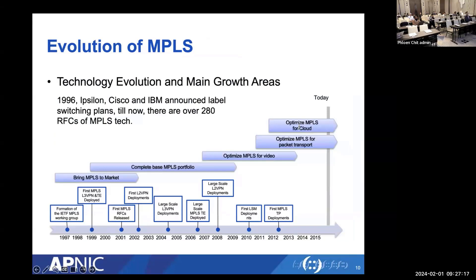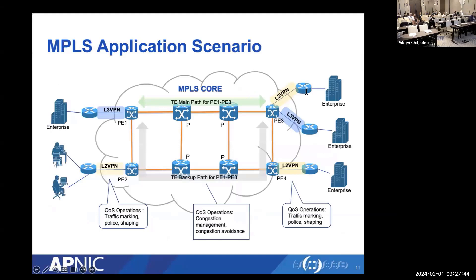Here's a quick summary comparing IP, Ethernet, and MPLS: IP is destination-based, Ethernet is Layer 2 destination-based, MPLS is label-based. IP uses IP header, Ethernet uses Ethernet header, MPLS uses MPLS header. For OAM, IP uses ping and traceroute, Ethernet uses Ethernet OAM, and MPLS uses MPLS ping and traceroute. MPLS evolution began in 1996 when Ericsson, Cisco, and IBM announced label switching plans, and now there are more than 280 RFCs for MPLS technologies.